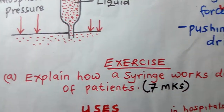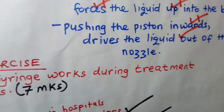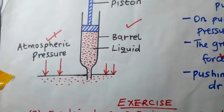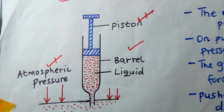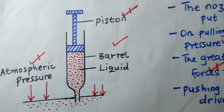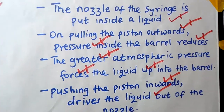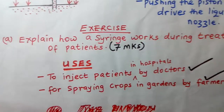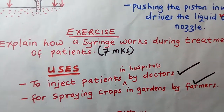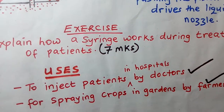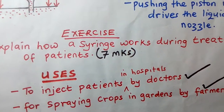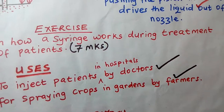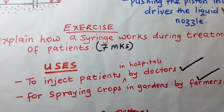If asked to explain how a syringe works during treatment of patients, draw and label the diagram, then explain its operation for full marks. Syringes are used by doctors to inject patients in hospitals during treatment. Farmers also use syringes for spraying crops in gardens, using particular types of syringes designed for that purpose.